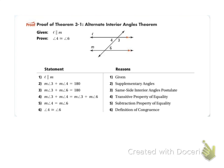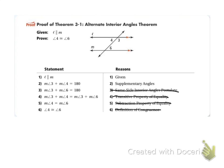Here is the proof of the Alternate Interior Angles Theorem. I'm going to cross these out so you can't read them as I go through. We cannot use the Alternate Interior Angles Theorem during this proof because that's what we're trying to prove. We are given that L is parallel to M. Then I can see that angle 3 and angle 4 add up to 180 because they are supplementary angles. And I can see that angle 3 and angle 6 add up to 180 because they are same side interior angles — we just learned that postulate.